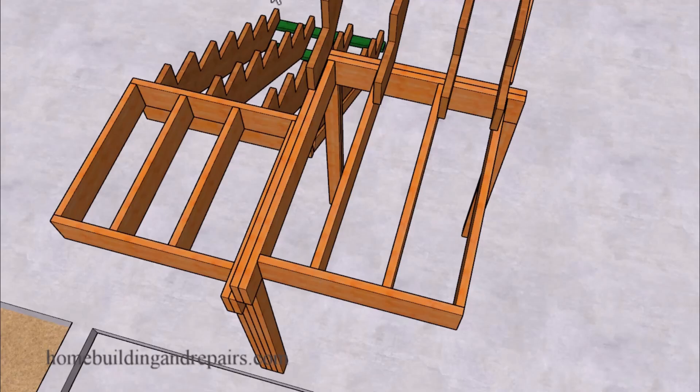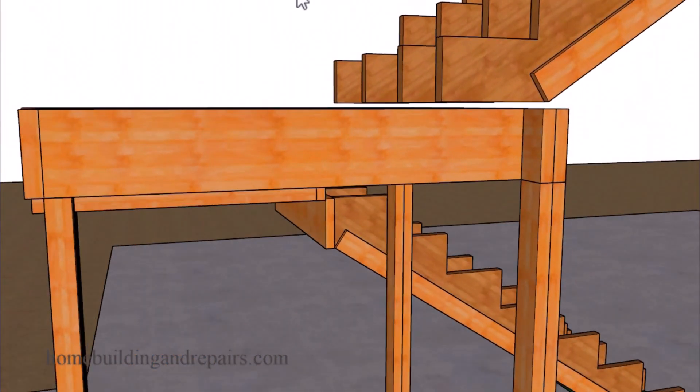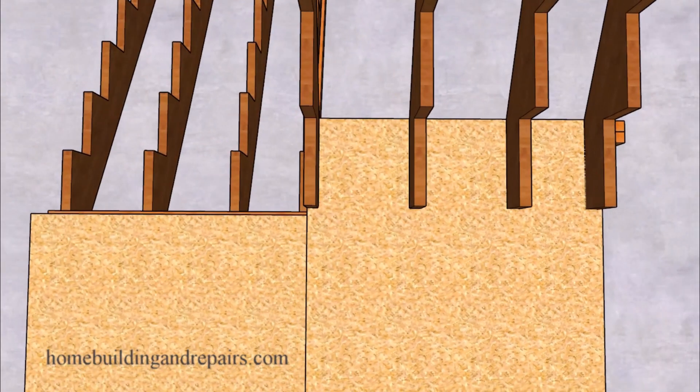Take a look at another view here where the stringers will be sitting on top of the landing sheathing. Of course this is an excellent way to create a stronger connection for the lower stringers and provide them with a solid surface to sit on.